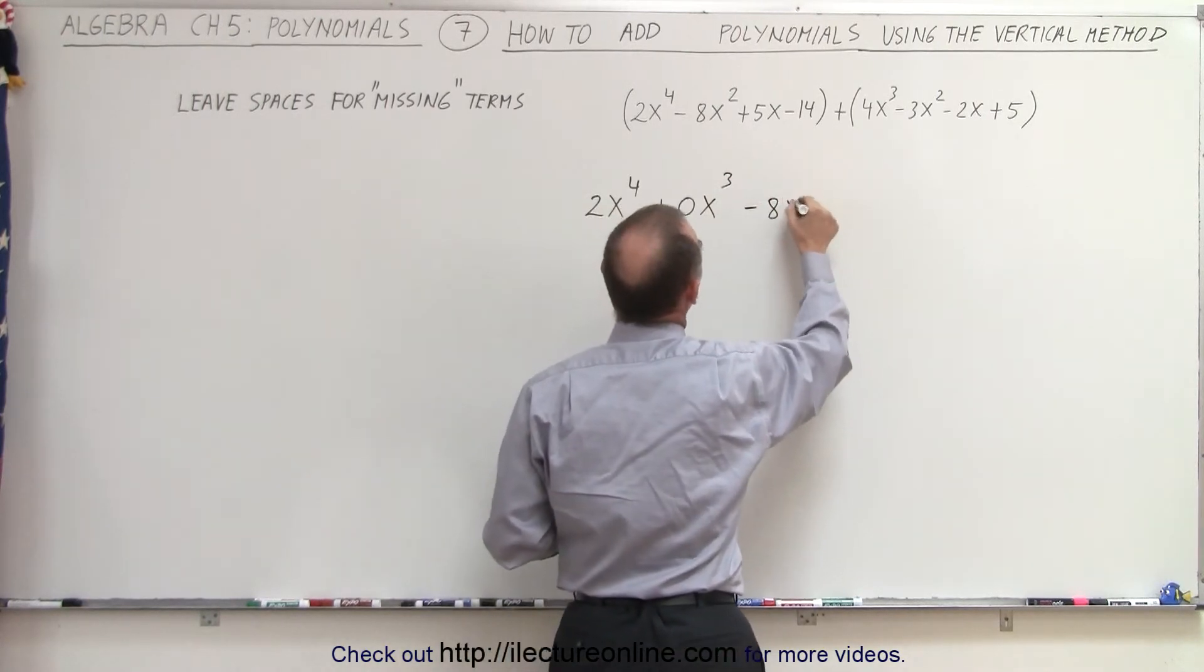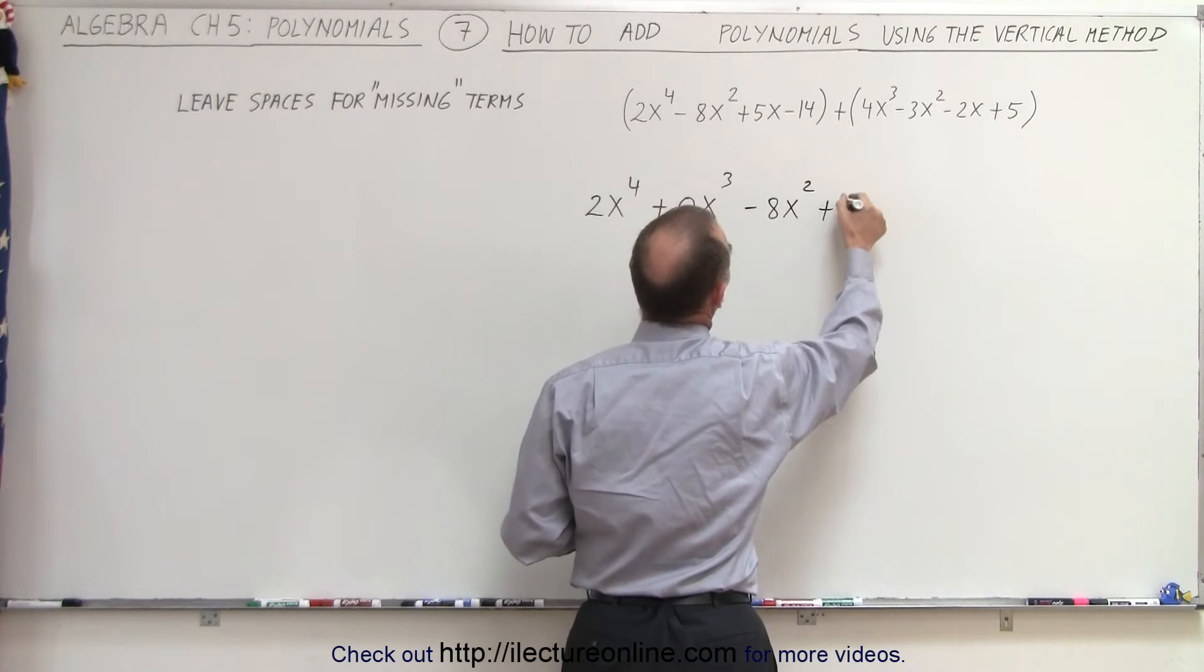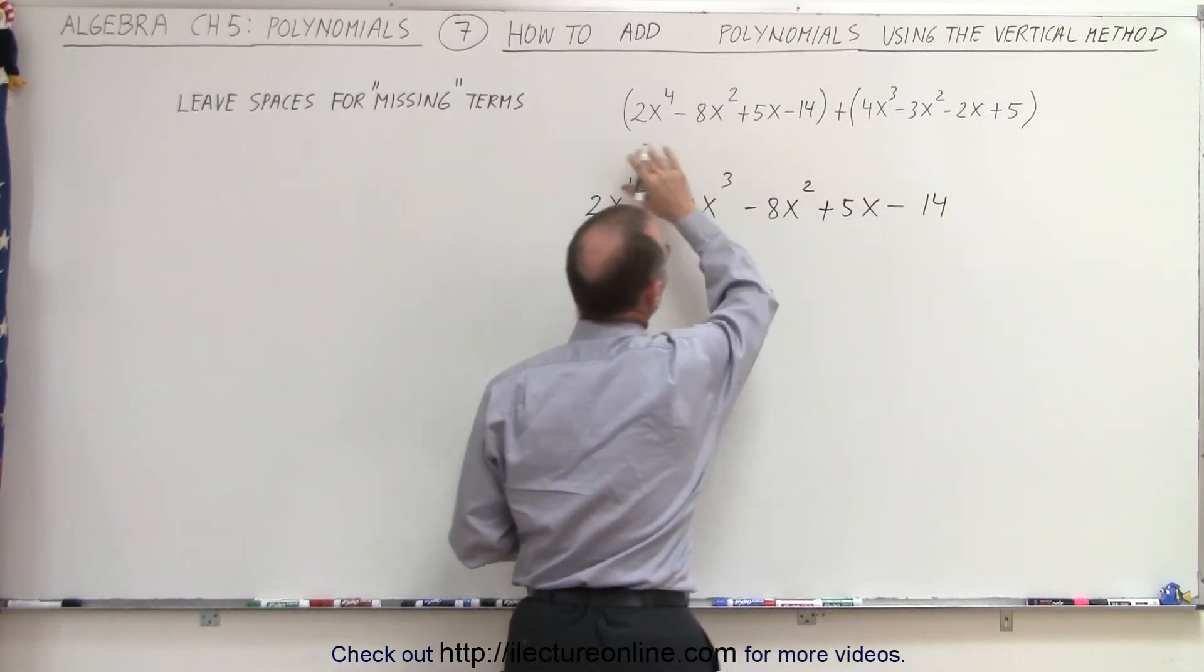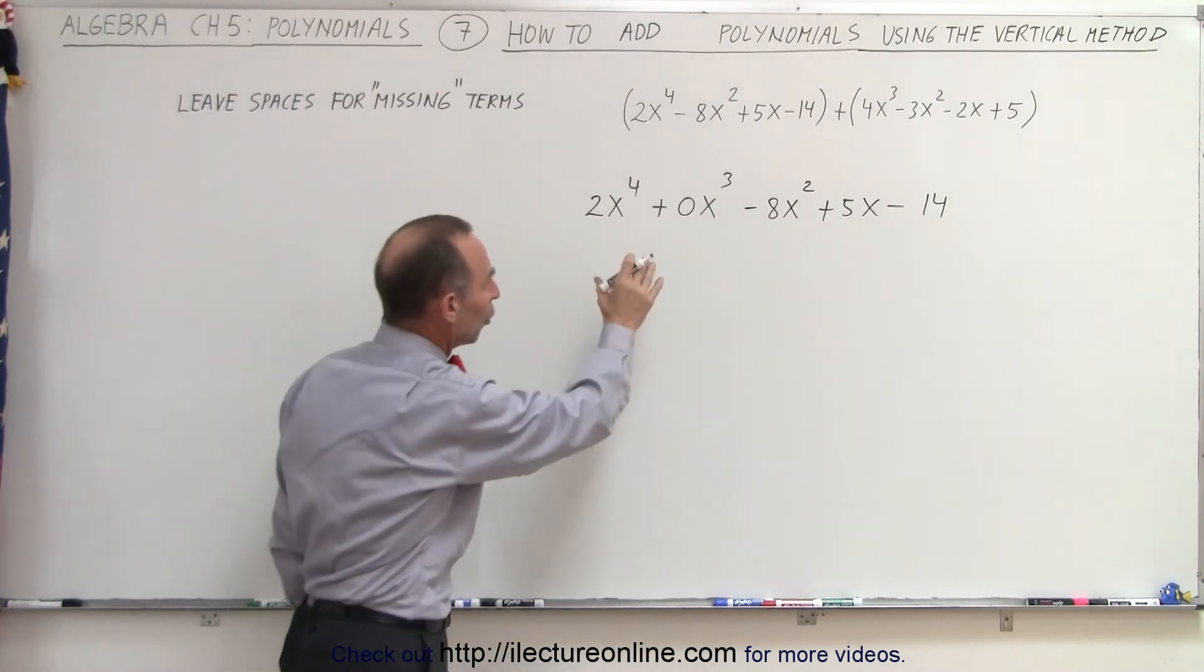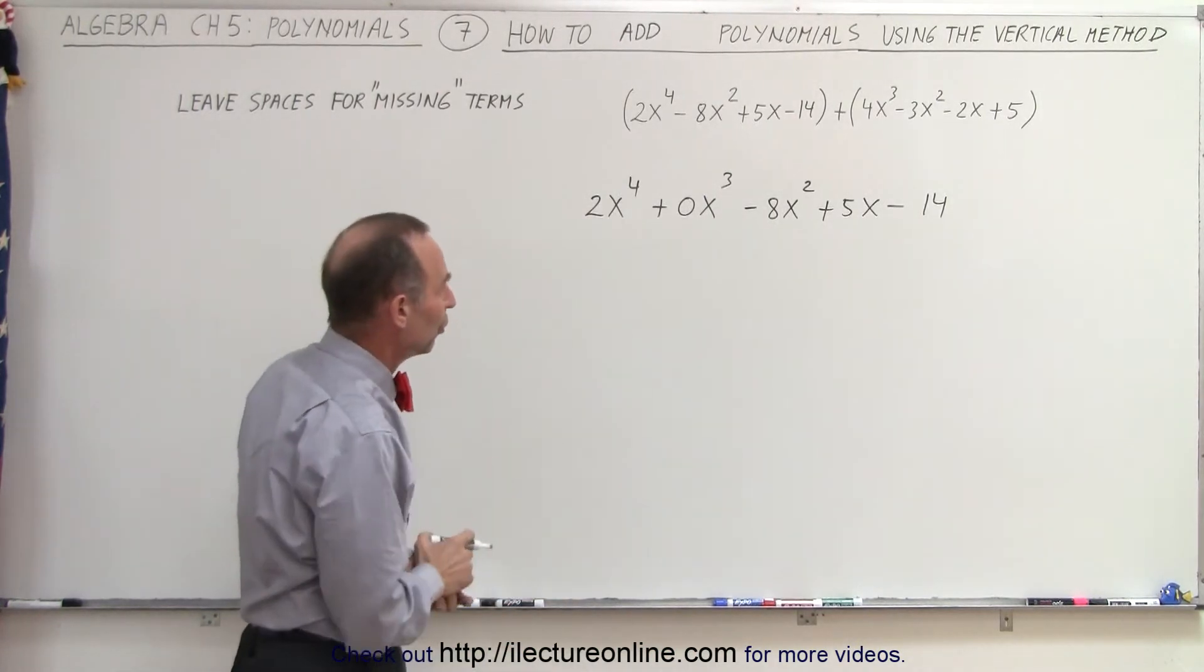Minus 8x squared, plus 5x minus 14. So, we've rewritten the first polynomial, and we put kind of a placeholder, an empty space where there's no term.